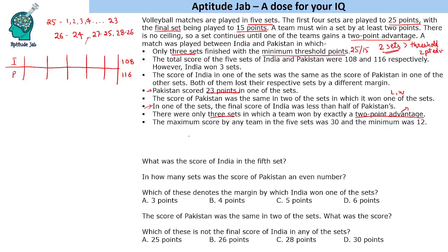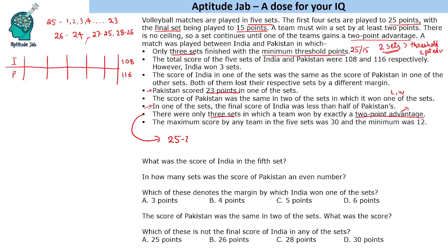For example, one set could go 26-24, another 27-25. The last set could also be involved. So if there are two sets with two-point advantage beyond threshold, there has to be one more set that is both at threshold and two-point advantage — meaning one set has to be 25-23 or 15-13.